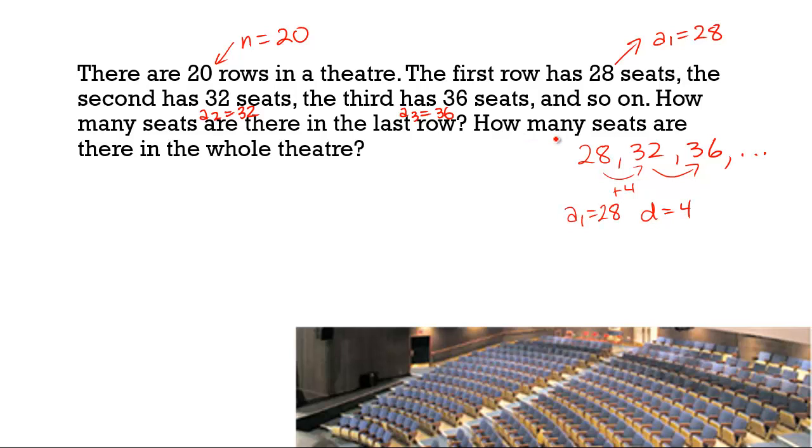And to find the total number of seats, S₂₀, we can use our formula. We have one half of the number of terms times the first term, 28, plus the last term. We have to find a₂₀, which will be 28 plus the difference times 19, which is 104. And when we plug that through, we get 1320. There are 1,320 seats in the total theater.